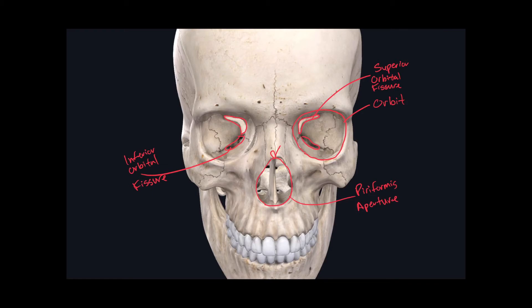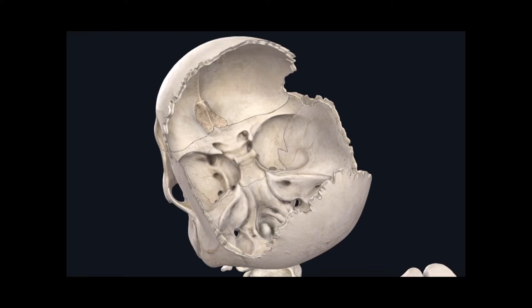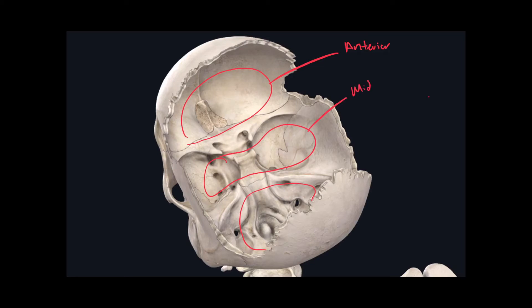If we go ahead and remove the parietal bones, we can see into the cranial cavity. In the cranial cavity, there are three depressions that we need to learn. These are called the anterior cranial fossa, the middle cranial fossa, and the posterior cranial fossa.